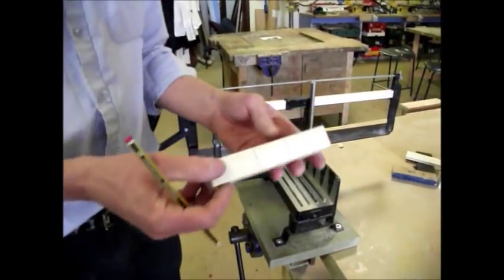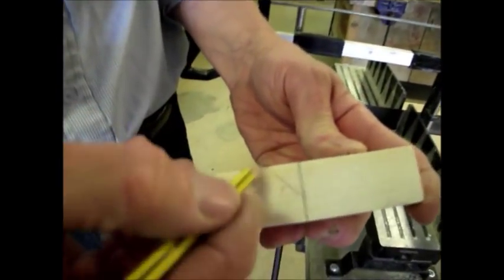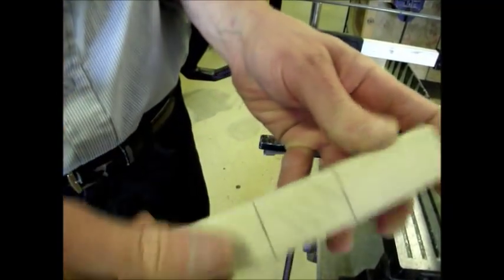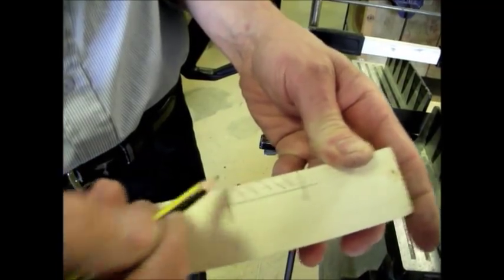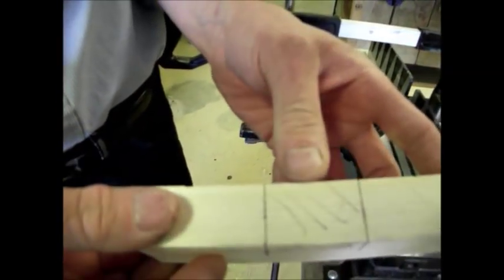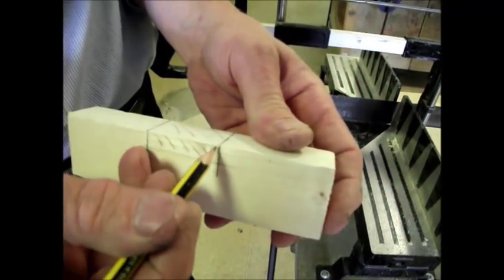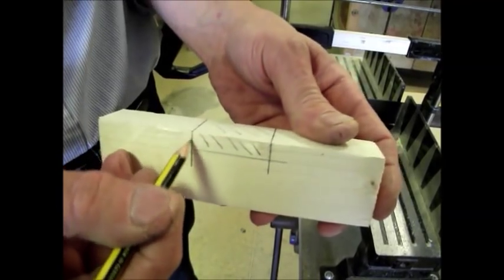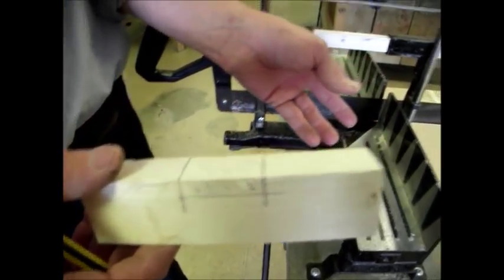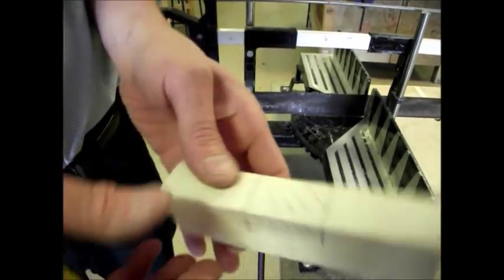We've marked out the housing. It's a good idea to shade what's going to be the waste, the bit that you're going to cut out, like that so that it's quite clear what you're doing. Now the first thing we're going to do is to saw down the sides there and there with the mitre saw, and then we're going to chisel out the waste piece out the middle there.